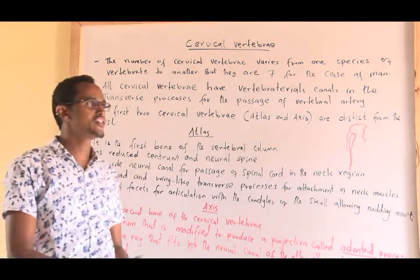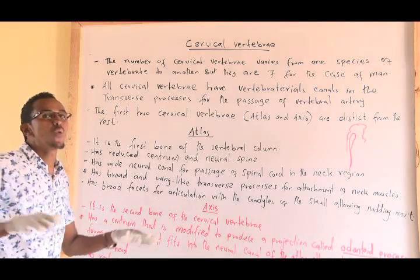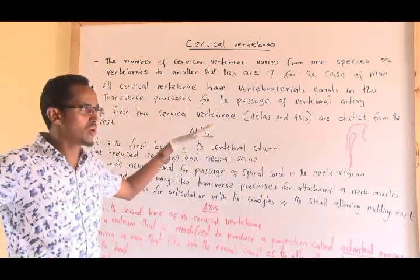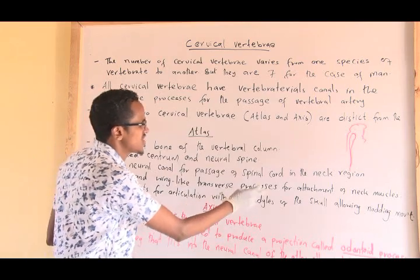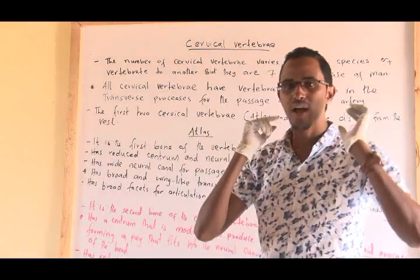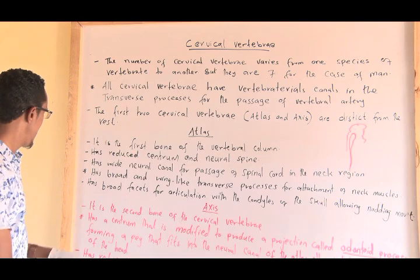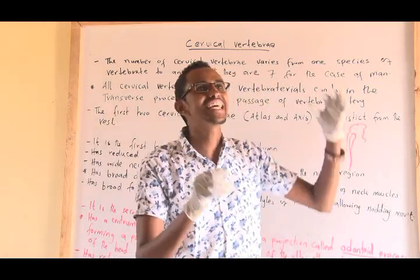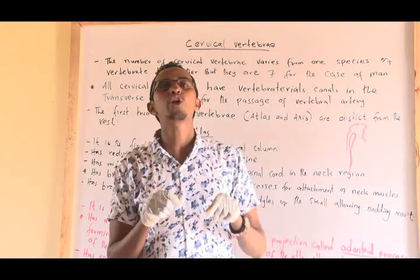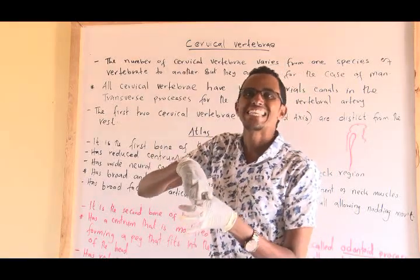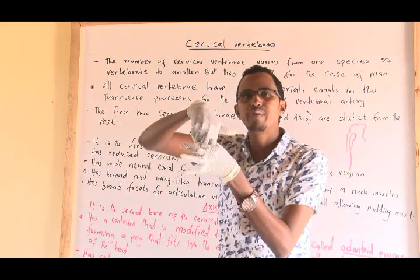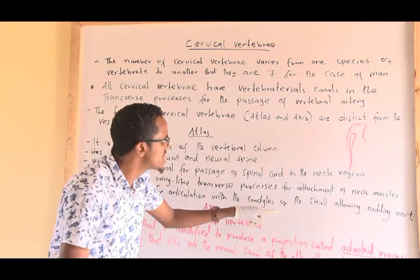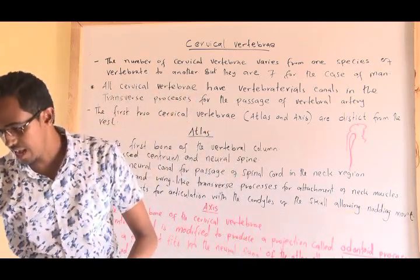The atlas has broad and wing-like transverse processes — broad lateral projections for the attachment of neck muscles. It also has broad facets for articulation with the condyles of the skull, allowing for nodding movement. At the back of the skull there are two round surfaces called condyles. These condyles fit into the atlas, allowing upward and downward movement of the head.